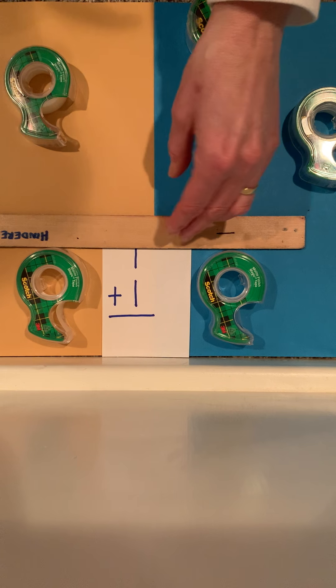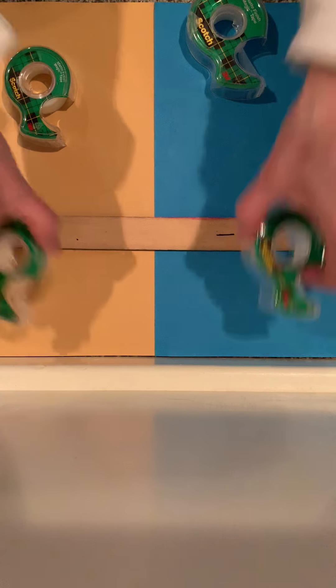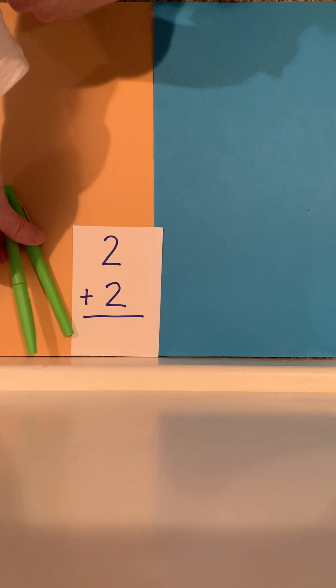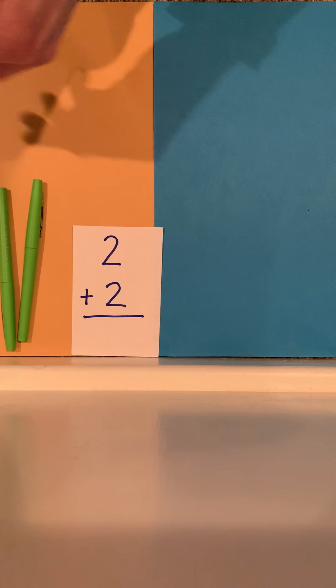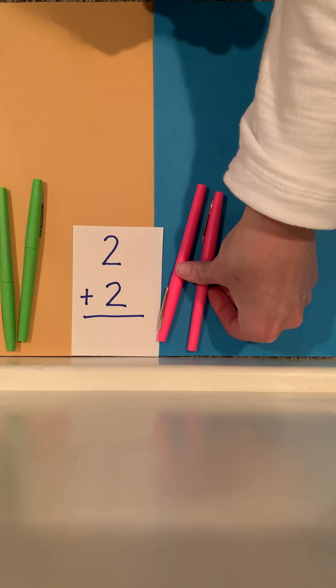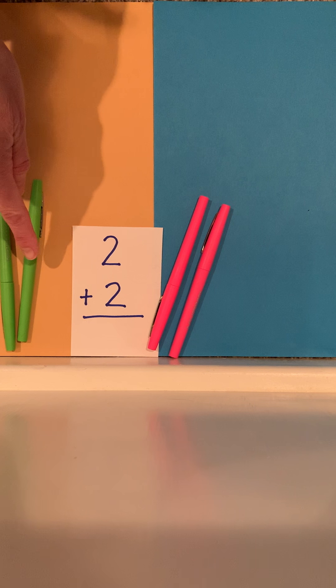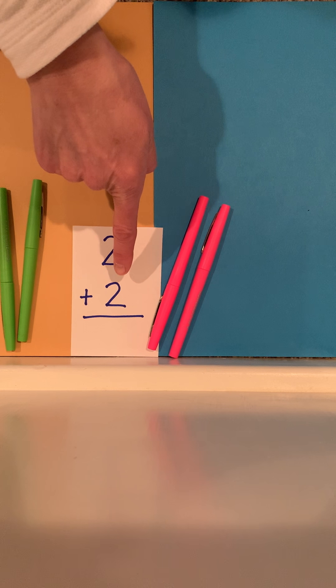Let's try the next one. This is my doubles 2 plus 2. If I have 2 markers plus 2 more markers, how many markers do I have all together? 1, 2, 3, 4. We know that the answer for 2 plus 2 is 4.